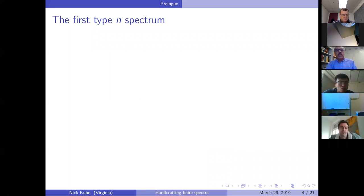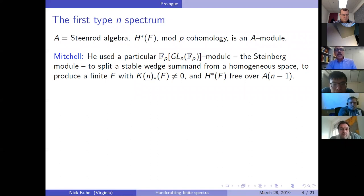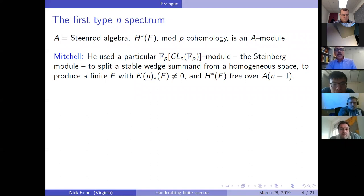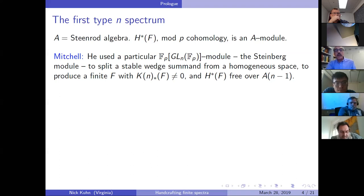It was fun to be starting out then — Mike Hopkins and I were both postdocs at Princeton, and I'd been a postdoc before that at the University of Washington where Doug Ravenel and Haynes Miller were, and Steve Mitchell was finishing his PhD. Steve Mitchell did not construct the v_n map. He used a particular modular representation of the general linear group over F_p — the Steinberg module — and split it off a particular homogeneous space to produce a finite spectrum.